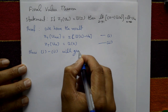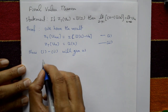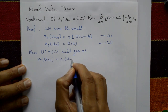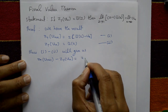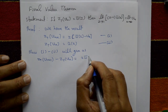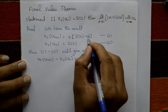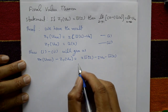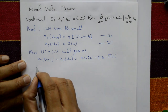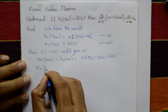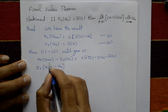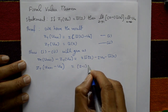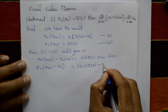Subtracting equation two from equation one gives: Z-transform of u[n+1] minus Z-transform of u[n] equals z·ū(z) minus z·u₀ minus ū(z). The left-hand side is the Z-transform of (u[n+1] minus u[n]), and the right-hand side simplifies to (z minus 1)·ū(z) minus z·u₀.